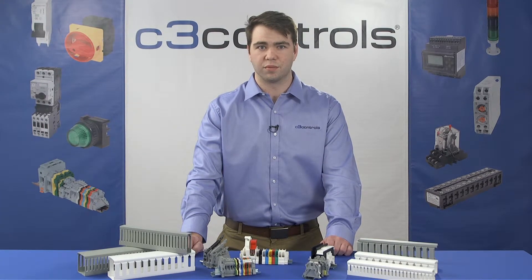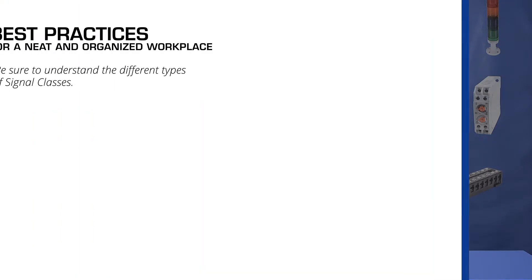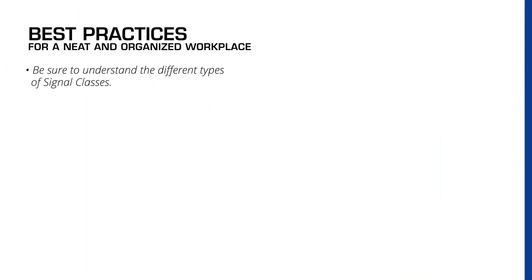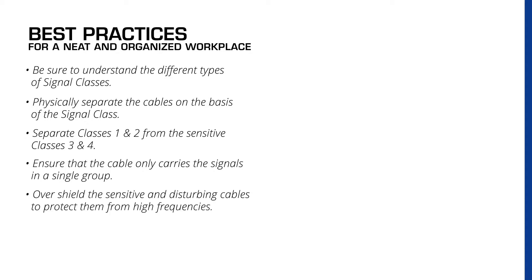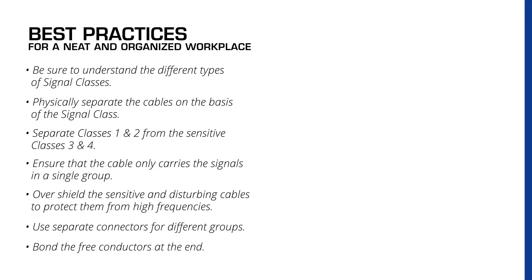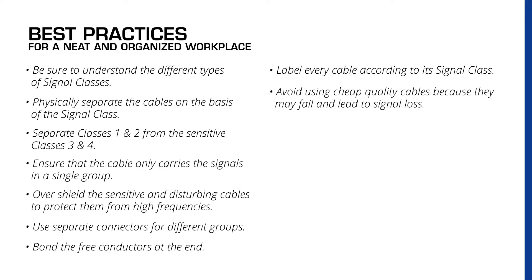Best practices are important to achieve a neat and organized workplace: be sure to understand the different types of signal classes, physically separate the cables on the basis of signal class, separate classes one and two from sensitive classes three and four, ensure that the cable only carries the signals in one group, over-shield the sensitive and disturbing cables to protect them from high frequencies, use separate connectors for different groups, bond the free conductors at the end, and label every cable according to their signal class.